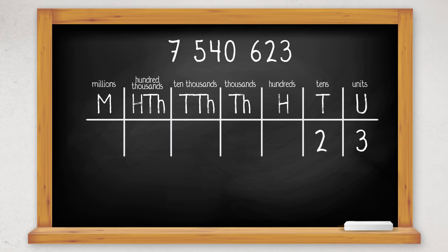Our number has three units, two tens, six hundreds, zero thousands, four ten thousands, five hundred thousands, and seven millions.